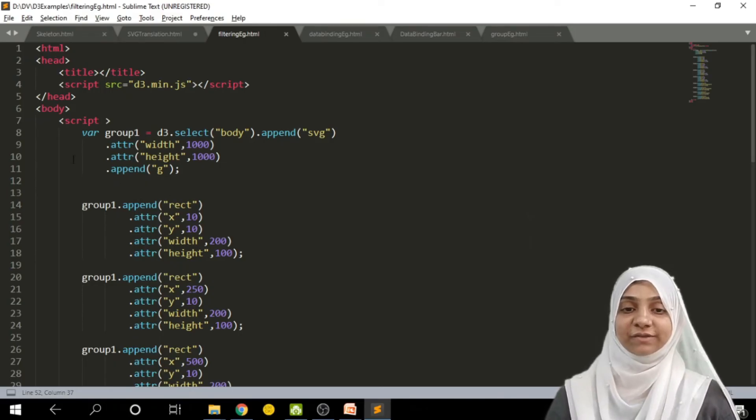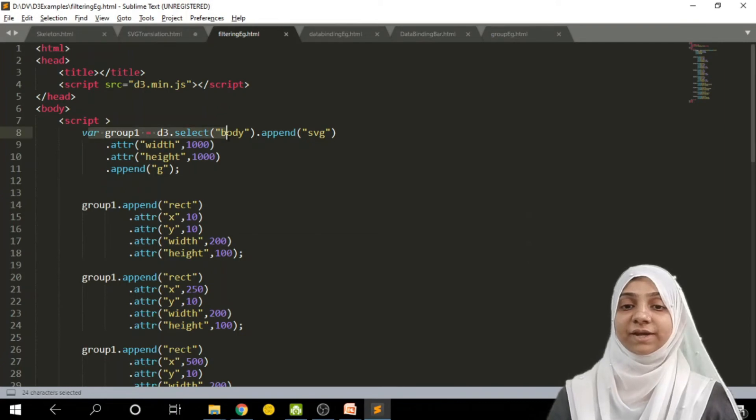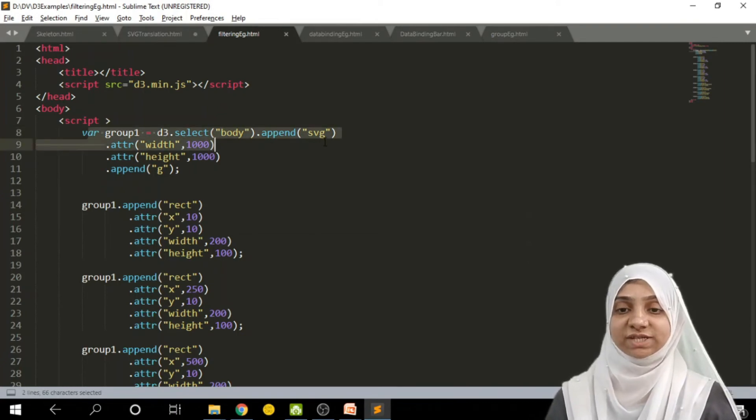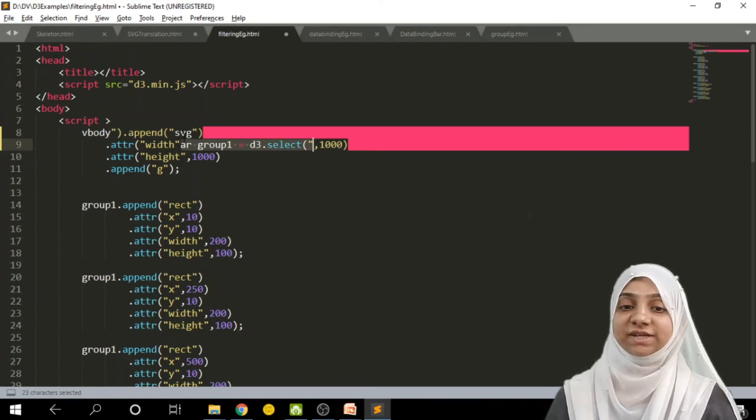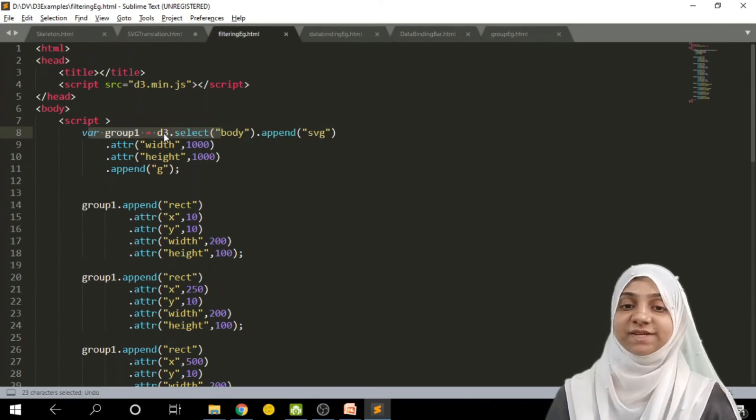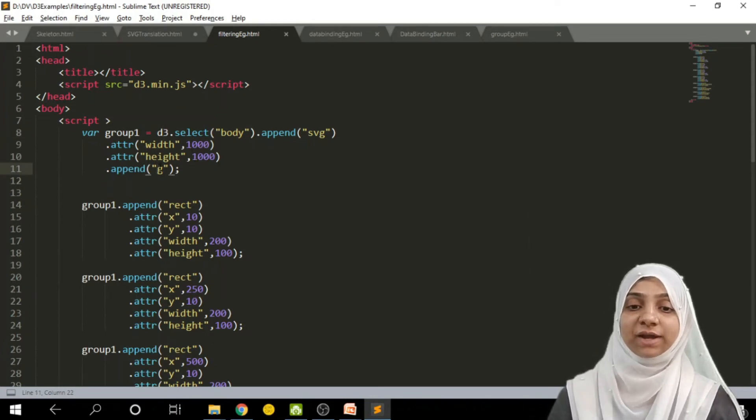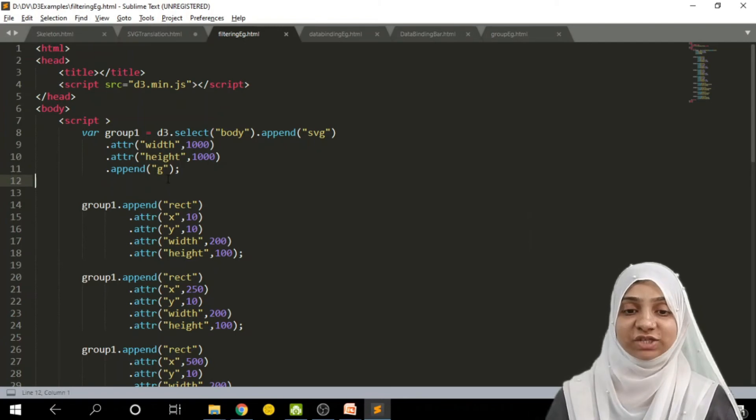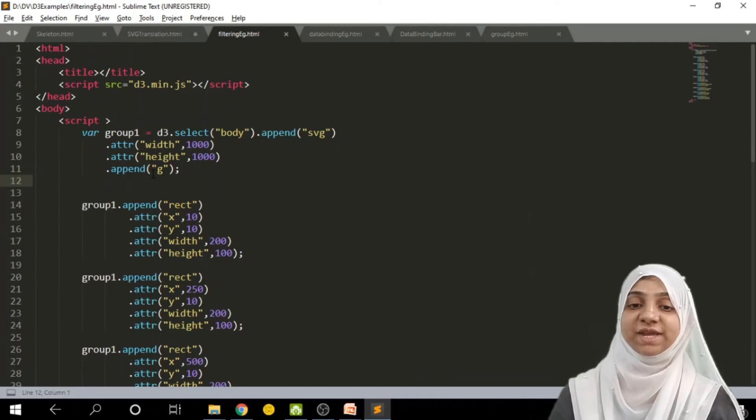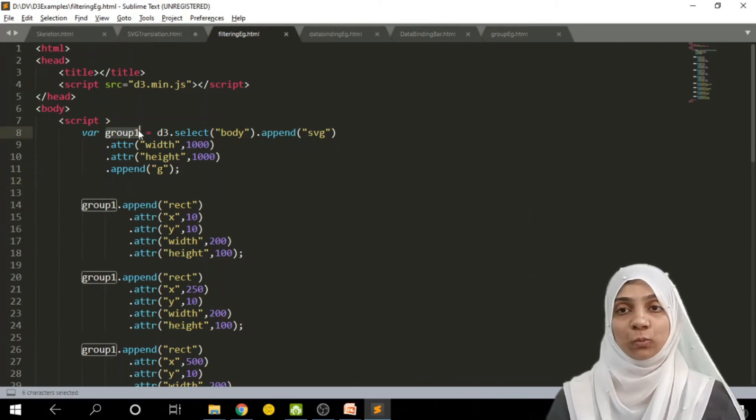Let me show you functionality of these options as well as filter function with the help of one example. For example, we have created one SVG tag within a body. That's why we write d3.select body, and we have appended one SVG element. Within an SVG element, width and height are set to 1000 by 1000 pixels. And we have added one group element, that is G. Within this complete selection, that is body, SVG, and G, are completely selected and stored inside variable group 1.